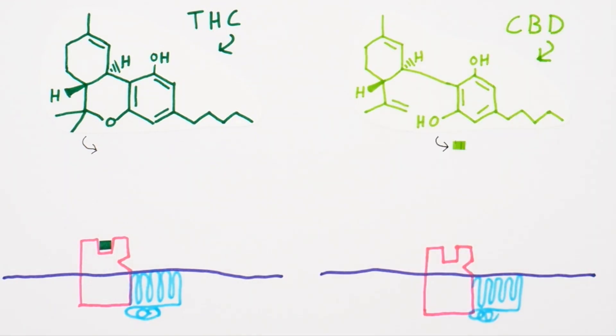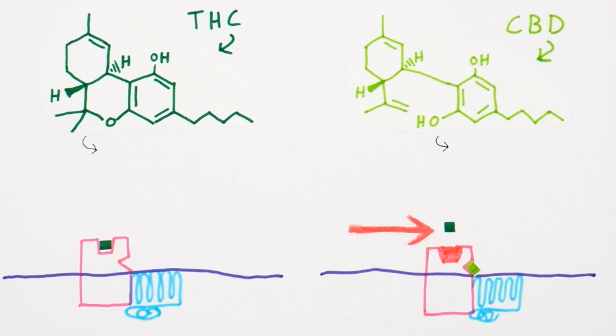CBD also acts on CB1 receptors but in a slightly different way. Instead of binding directly, CBD binds to another part of the receptor, which actually stops THC from being able to bind so easily. This is called allosteric inhibition. It shows that THC really drives the psychoactive effects, while CBD acts to dampen them. But the precise mechanisms are not fully understood, so there's another tool we can use — neuroimaging.